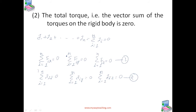The conditions of equilibrium of a rigid body may be compared with those for a particle. Since consideration of rotational motion does not apply to a particle, only the conditions for translational equilibrium apply to a particle. For equilibrium of a particle, the vector sum of all the forces on it must be zero, and since all these forces act on a single particle, they must be concurrent — this is equilibrium under concurrent forces.